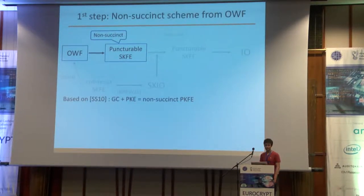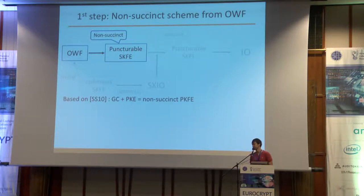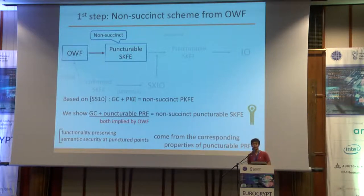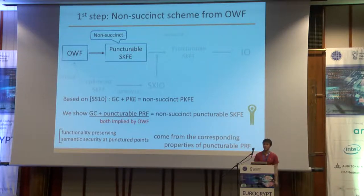The first step is based on a construction technique proposed by Sahai and Waters. They showed how to construct non-succinct PKFE based on garbled circuits and public key encryption. Based on their technique, we show how to construct non-succinct puncturable SKFE based on garbled circuits and puncturable pseudorandom functions, both implied by one-way functions. The functionality-preserving property and semantic security at punctured points can be proved based on the corresponding properties of the underlying puncturable pseudorandom function.